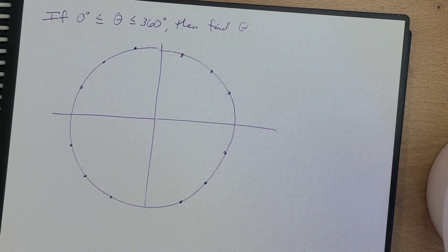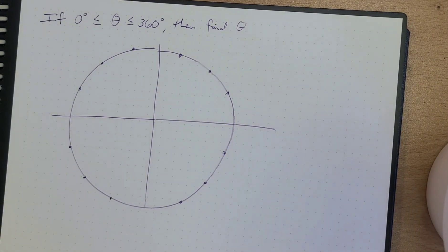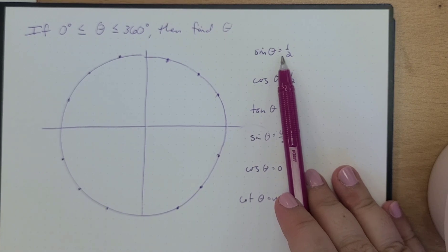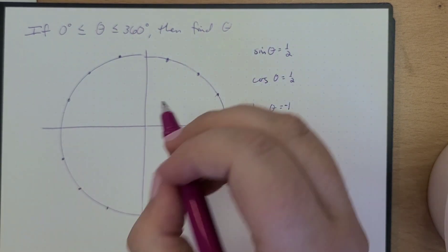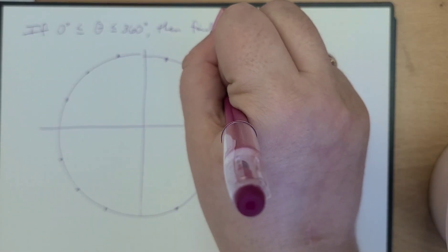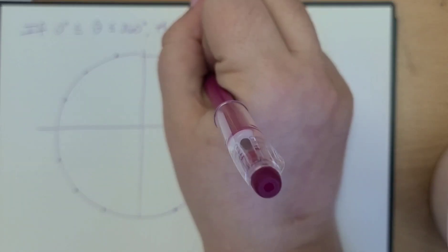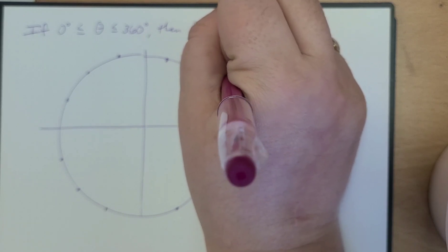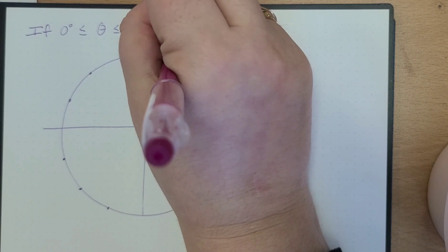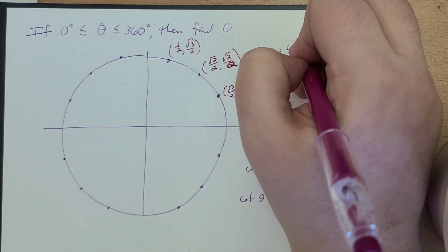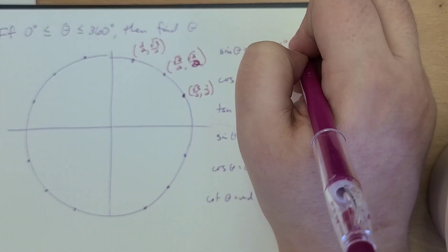Let's finalize this by finding a few more angles — a lot of practice with this unit circle. When is sine of theta equal to one half? That means it's going to have to be positive. We know this angle would be (√3/2, 1/2). So when is sine one half? Right here — this is 30 degrees, which is equal to π/6.